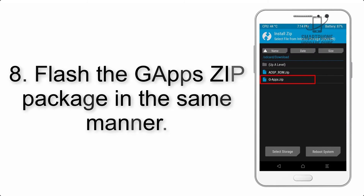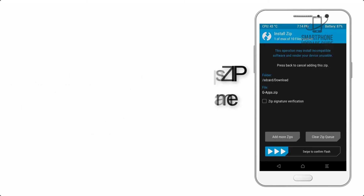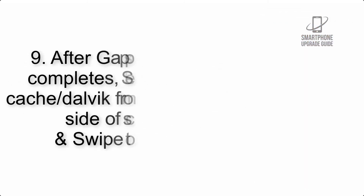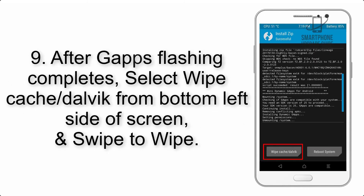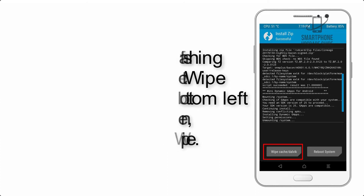Step 8: Flash the GApps zip package in the same manner. Step 9: After GApps flashing completes, select Wipe Cache and Dalvik from the bottom left side of the screen and swipe to wipe.